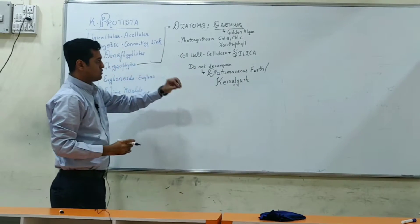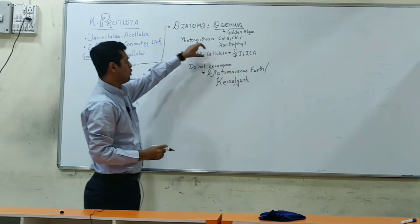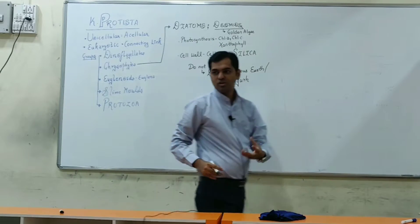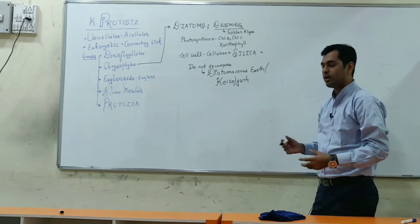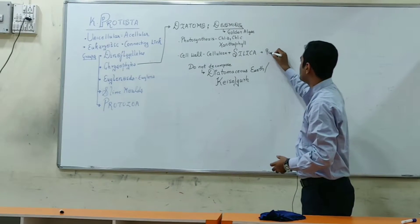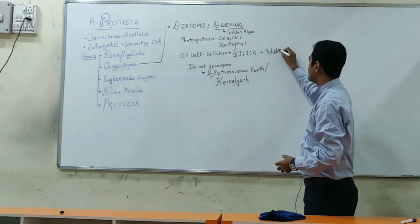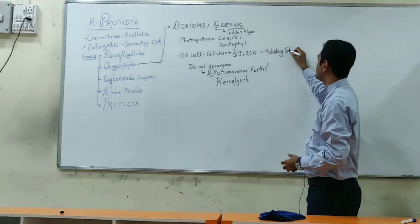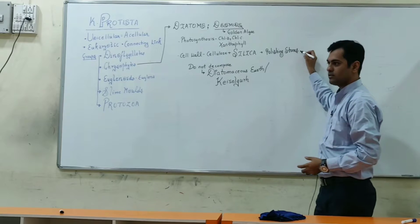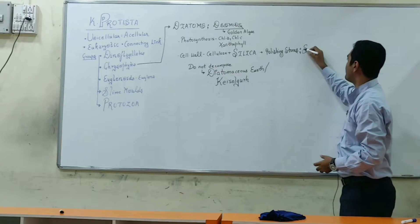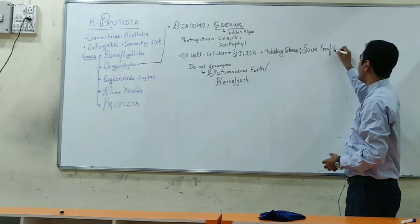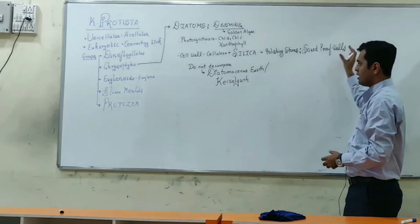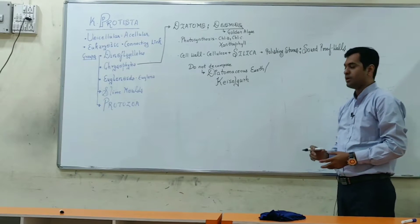Because of their siliceous cellulosic cell wall, diatoms have been used for multiple purposes. They are utilized for polishing stones using diatomaceous earth particles. They have also been used to make soundproof walls using diatomaceous earth combinations.